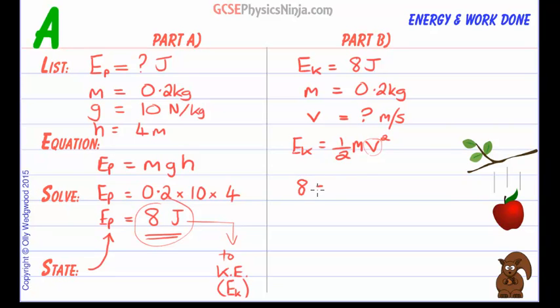So 8 is equal to a half times 0.2. I'm using brackets in this instance to denote multiplication, multiplied by V squared. We need to make V the subject. Let's first of all work this bit out. So we get 8 is equal to 0.1 V squared, and then divide both sides by 0.1.